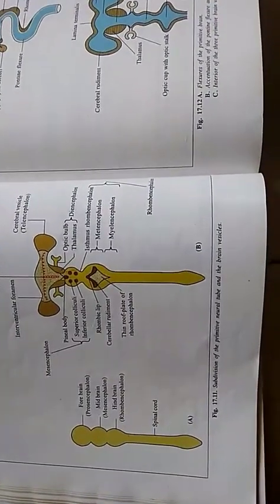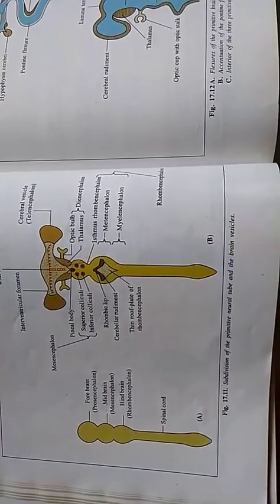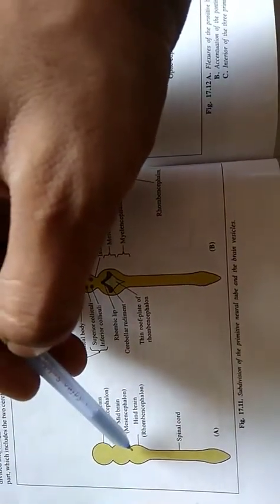Having learned the development of neural tube and spinal cord, we will now learn the development of the brain. Brain develops from that part of neural tube which lies cephalic to the fourth somite.